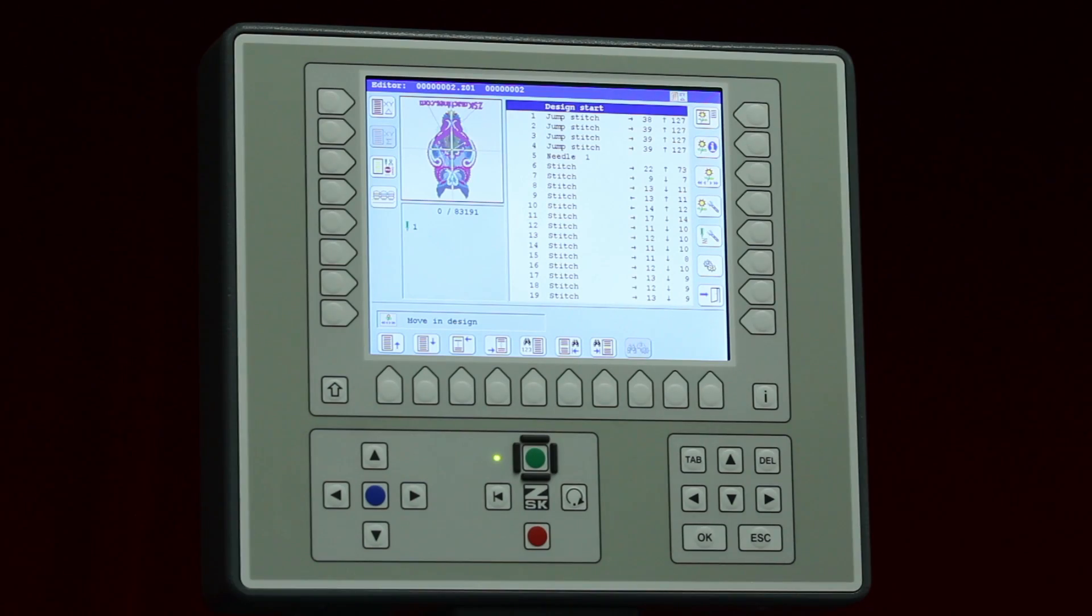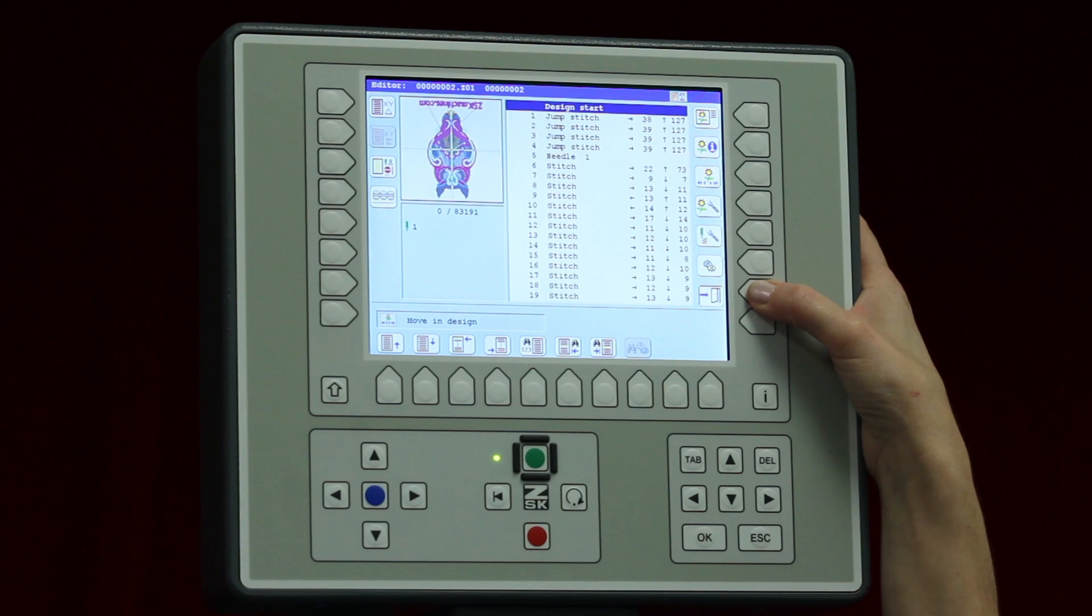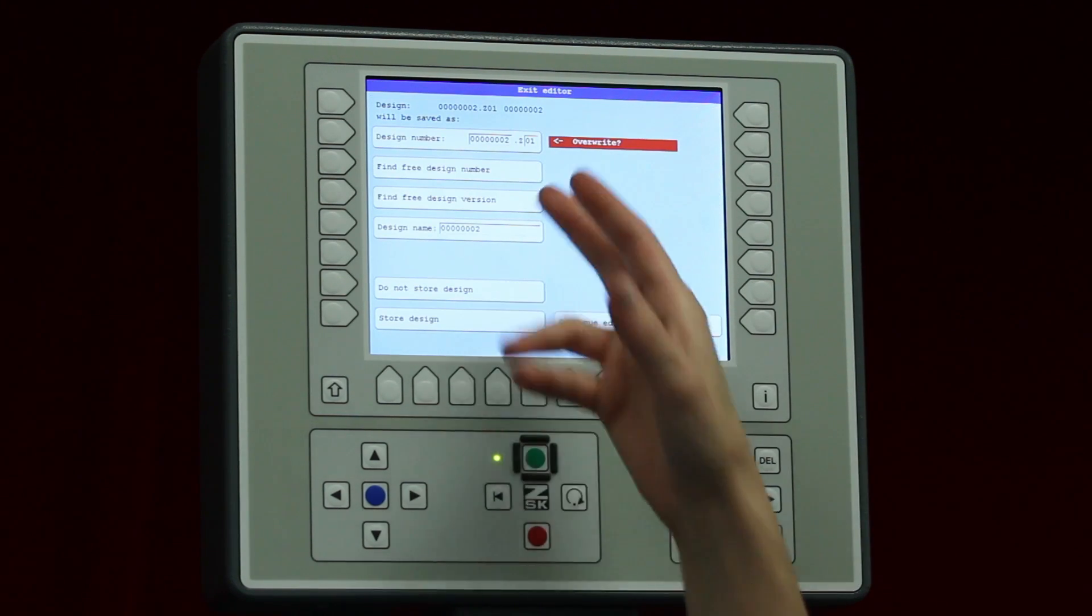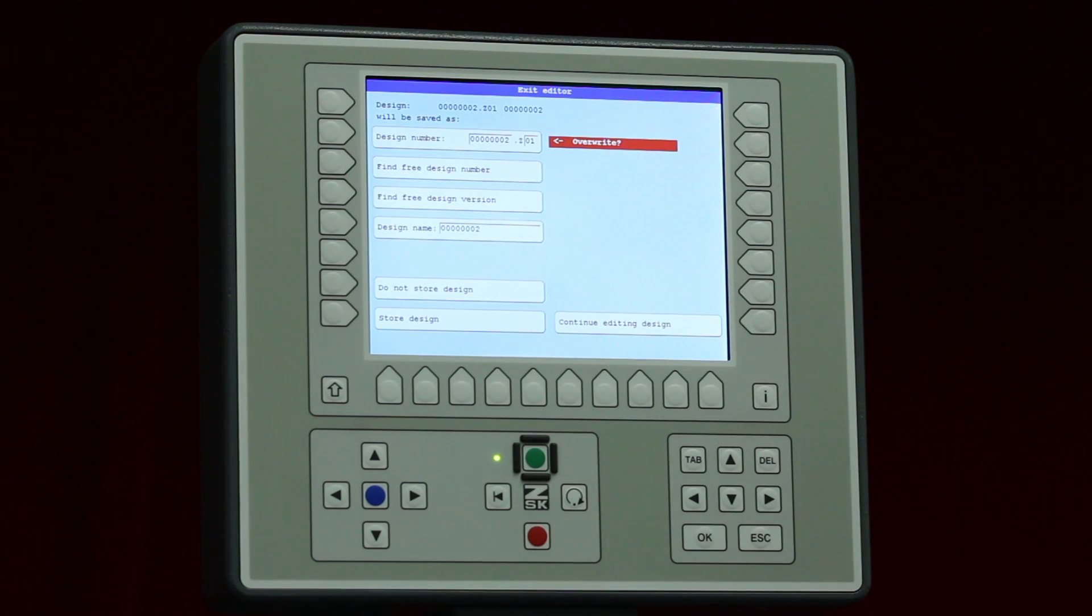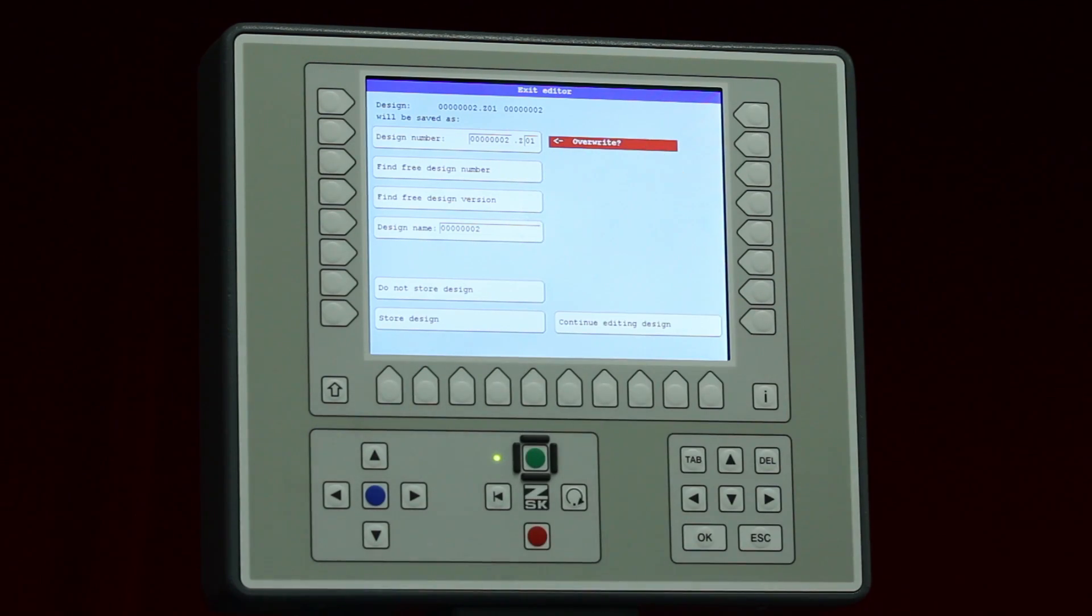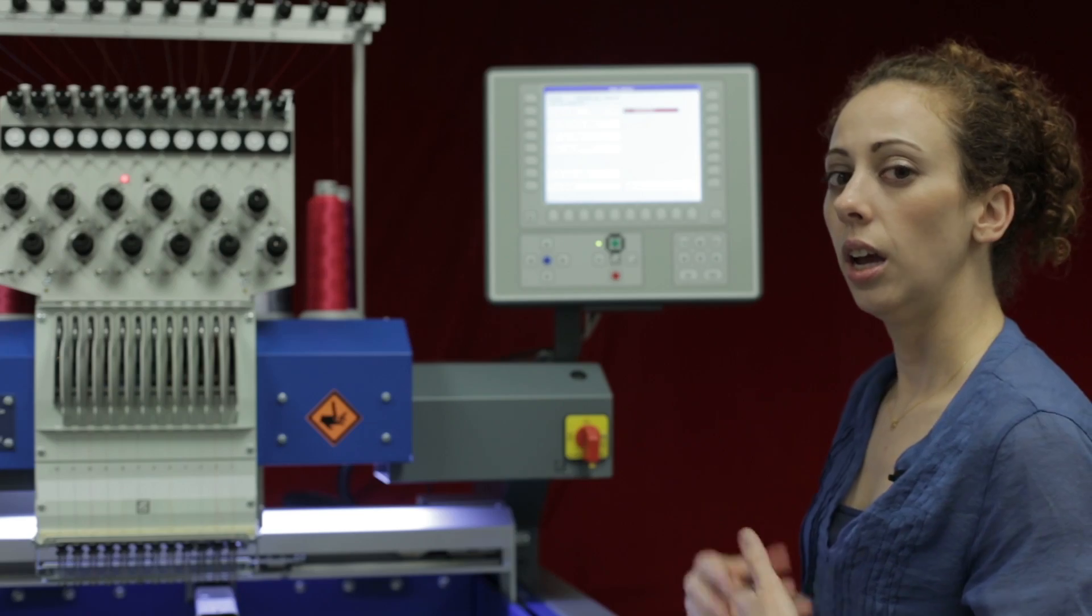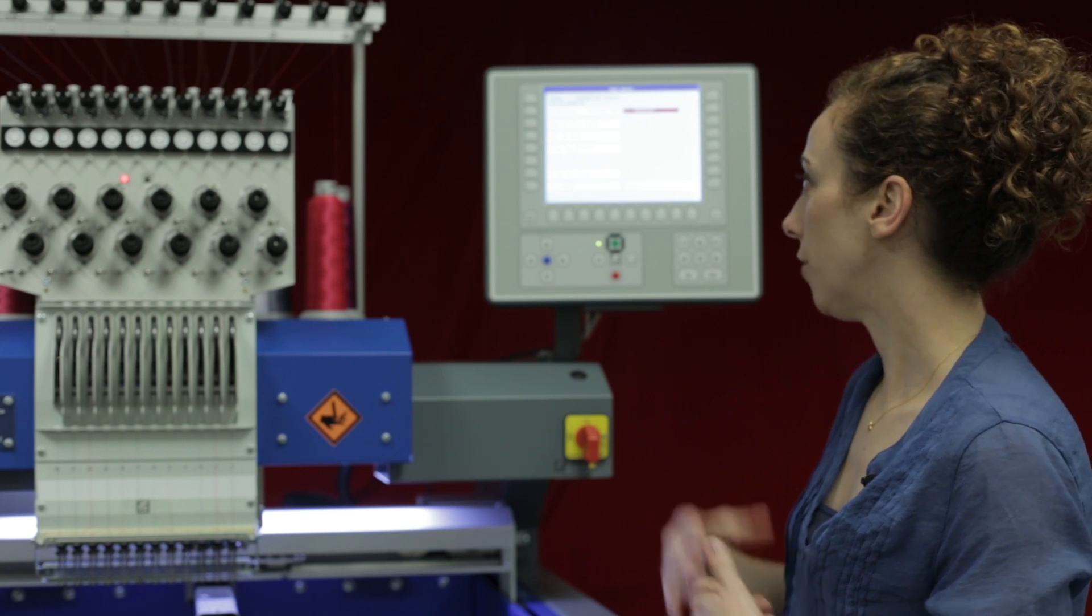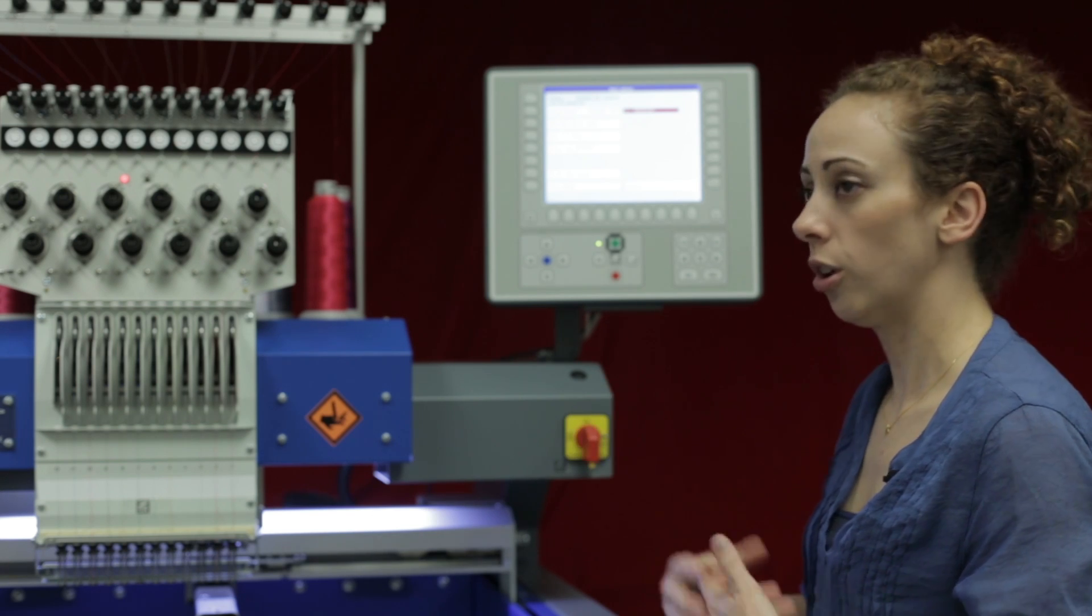This time we are going to get out of the editor because that's all I want to change. I hit the exit button here and now I have the option to overwrite the design by clicking store design. It's asking me do I want to really overwrite. If I hit store design I then will overwrite it.